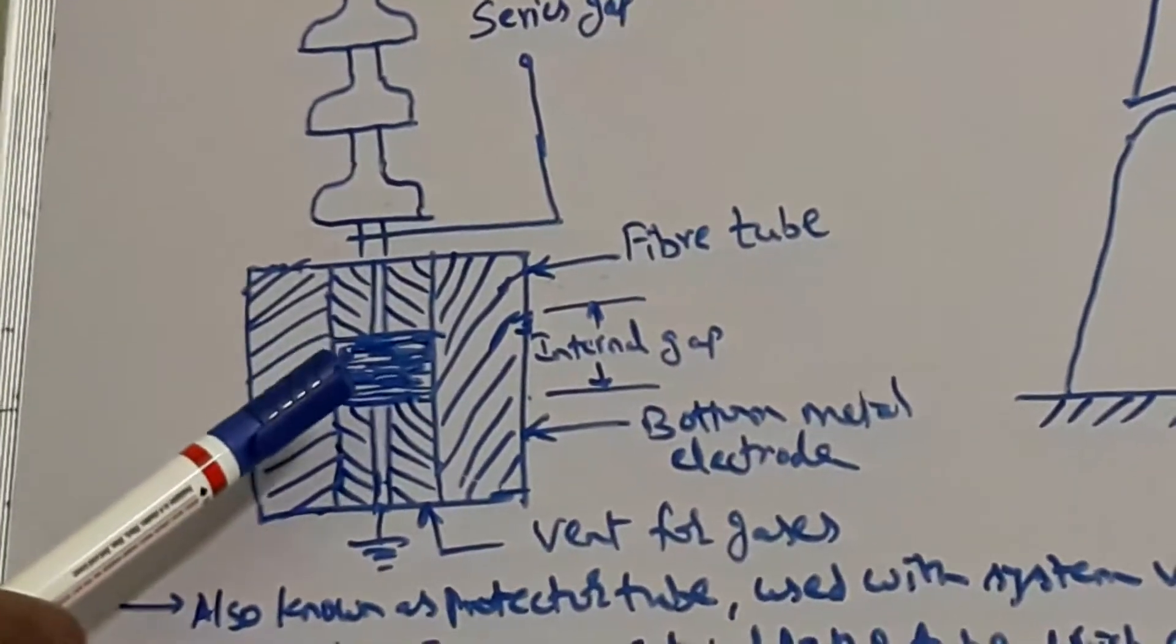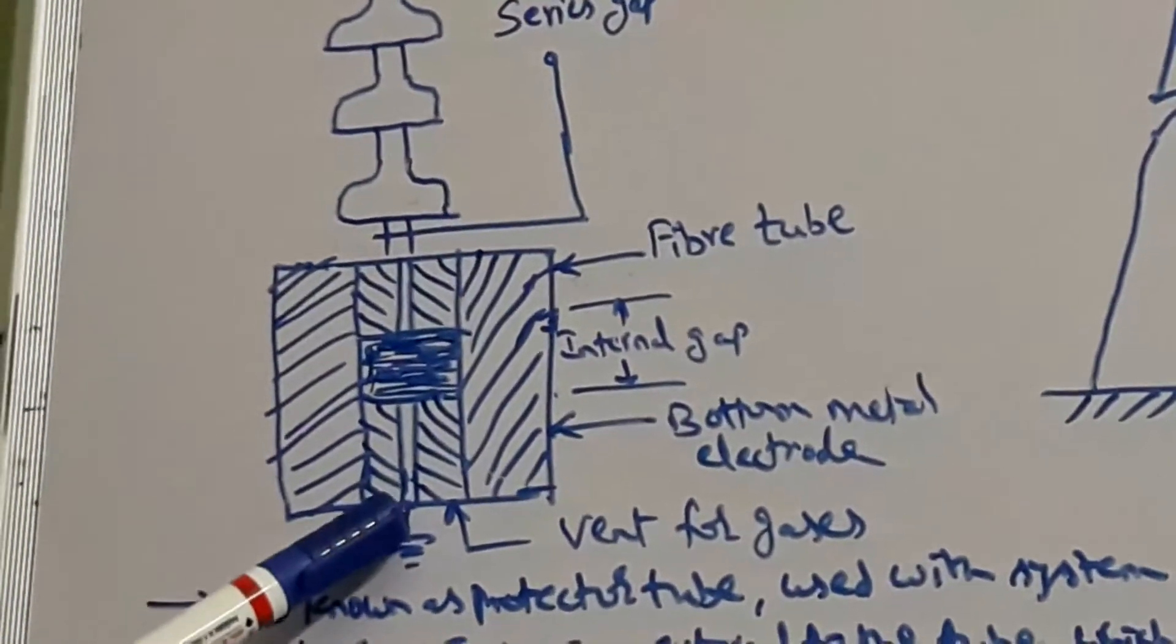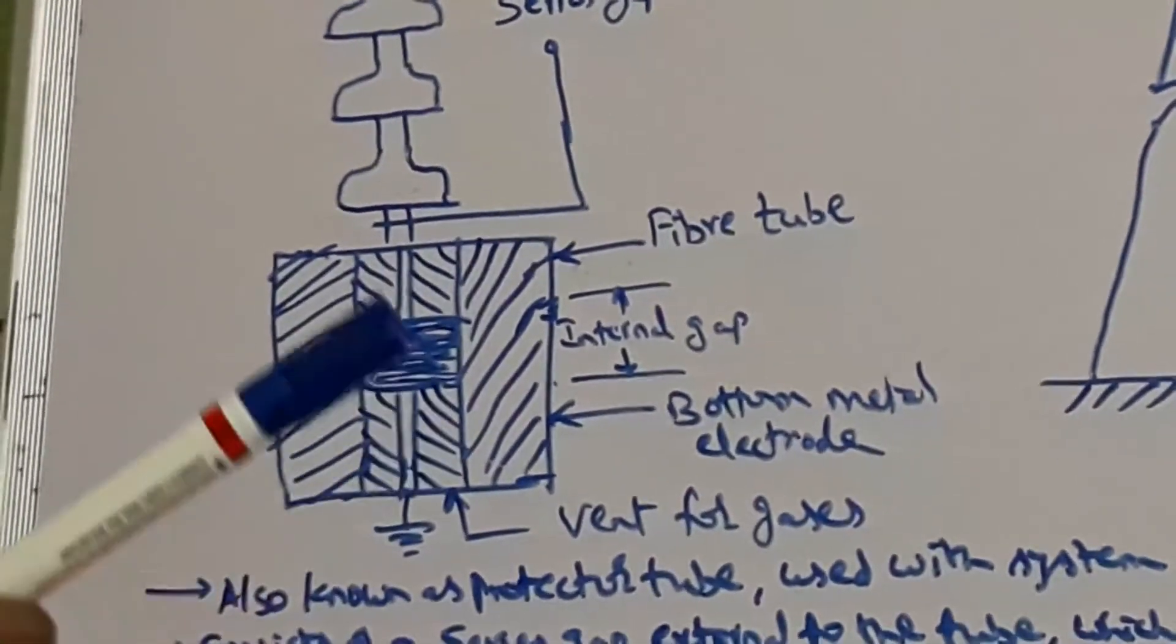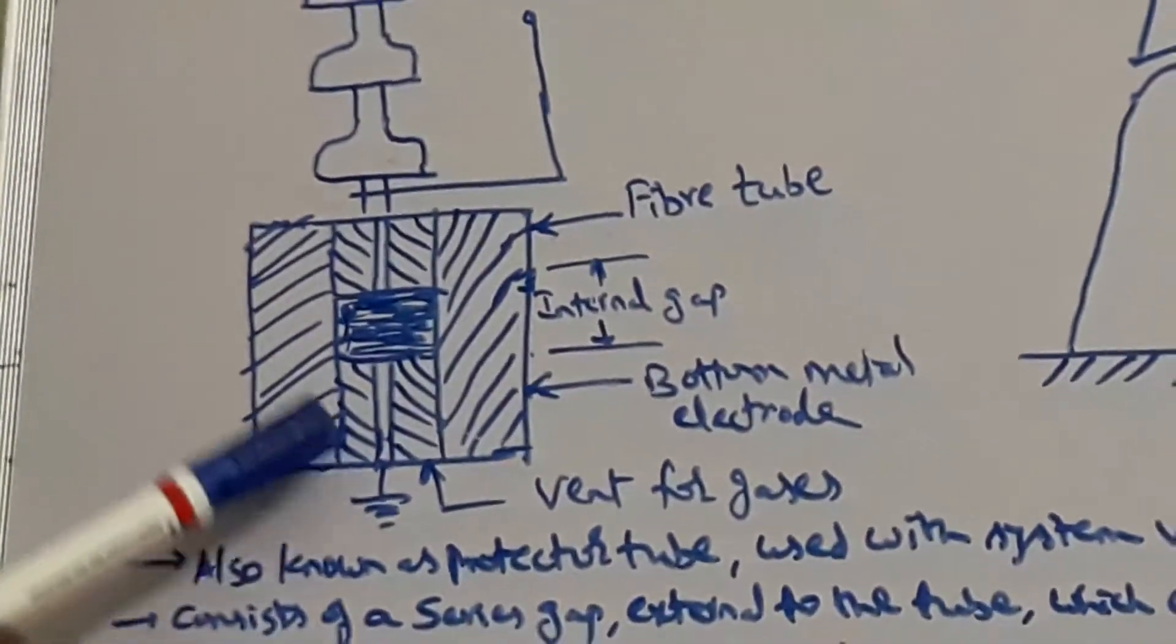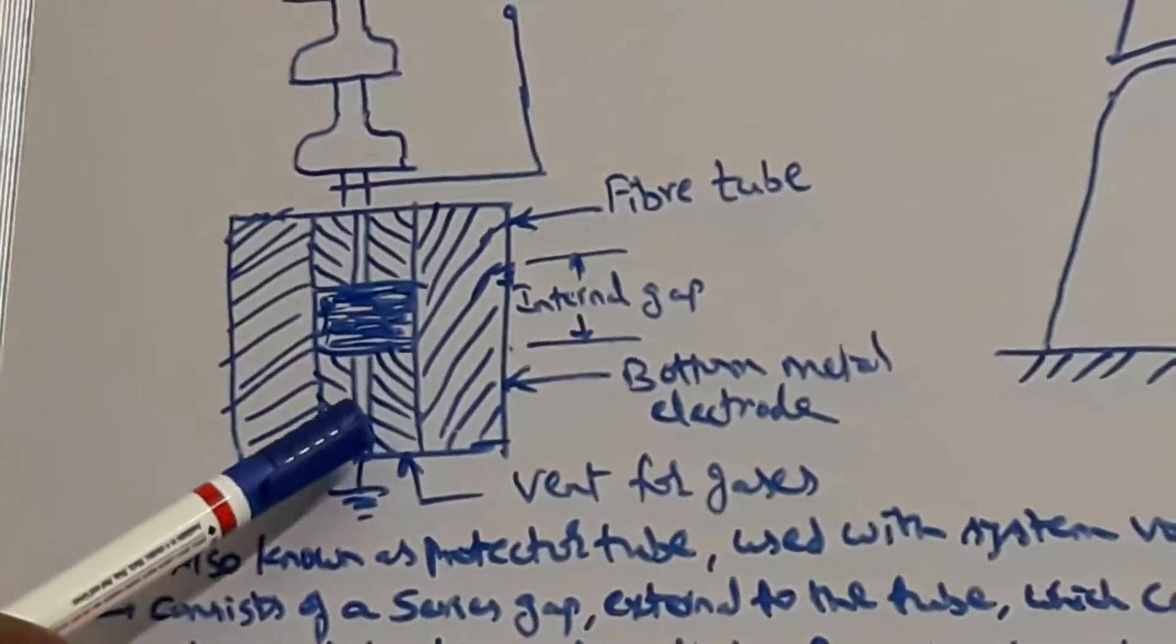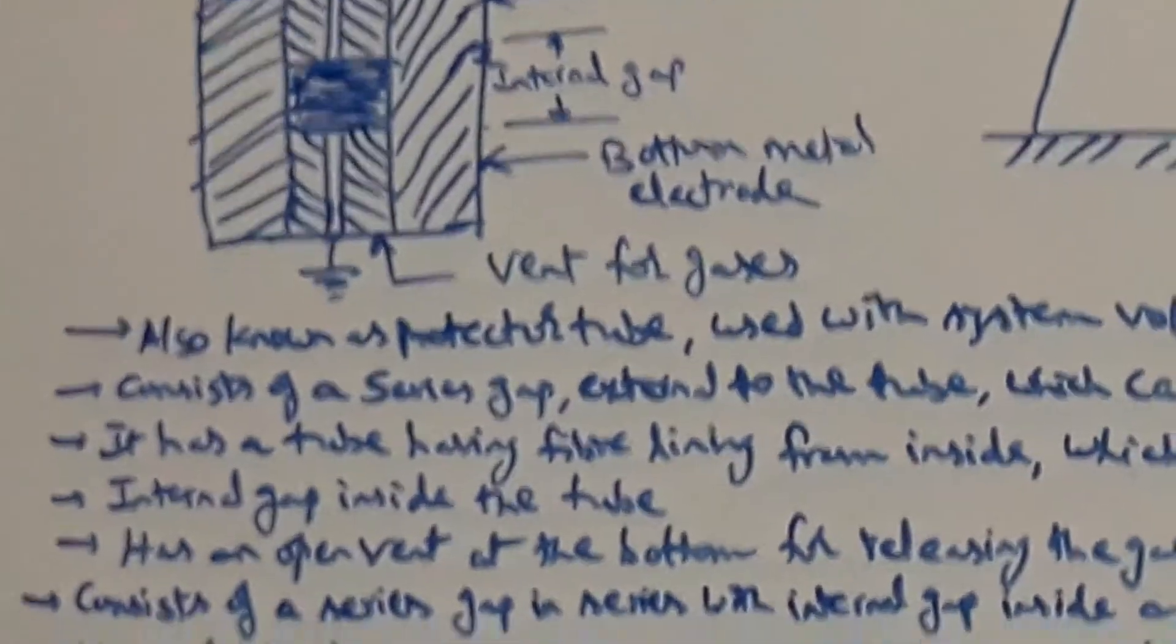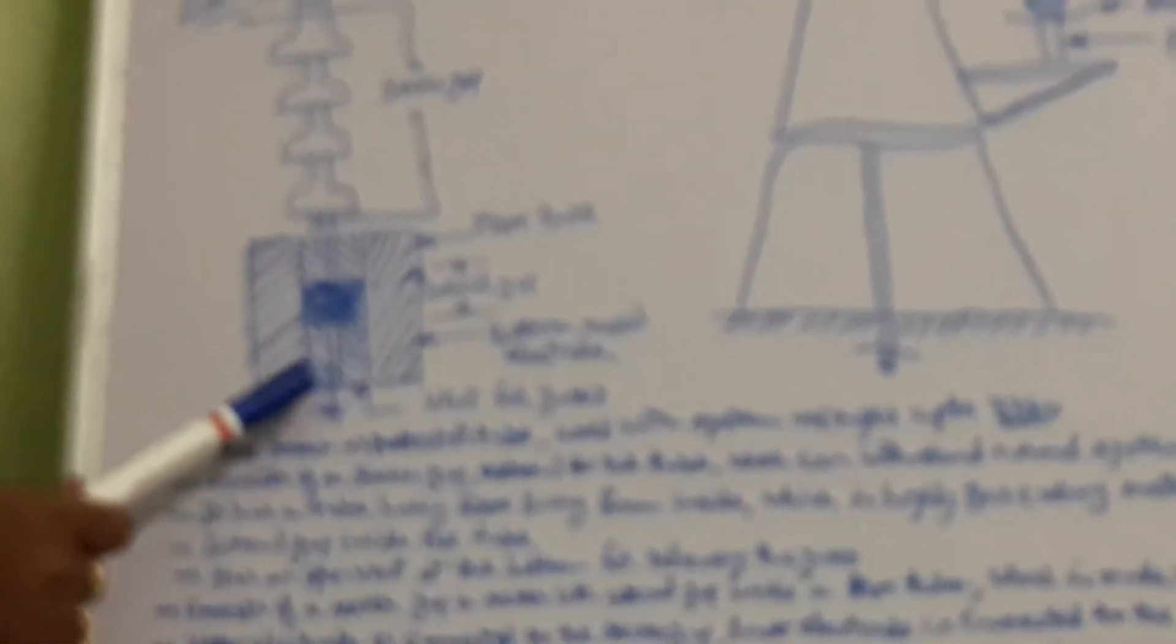The gas leaving the tube is violent and carries with it the ionized air around the arc. As it carries the ionized air, deionization of the arc takes place, and due to this deionization effect, the arc is extinguished without restriking again.